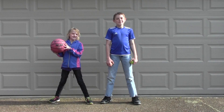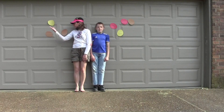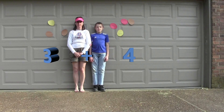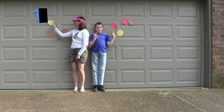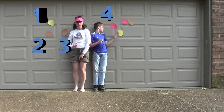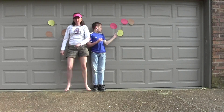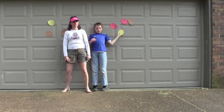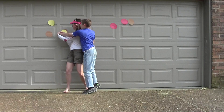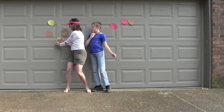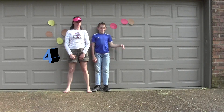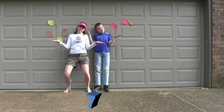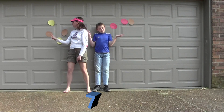I have three cookies, you have four. Together we have seven — one, two, three, four, five, six, seven. Swip swap, a flip flop. But if I have four and you have three, do we still have seven, you see?